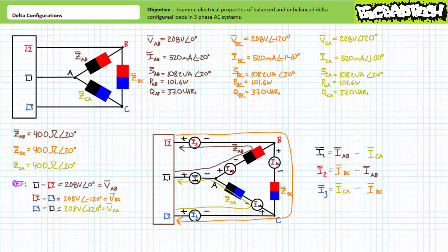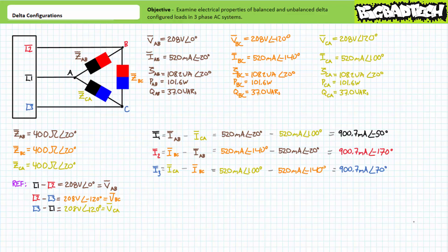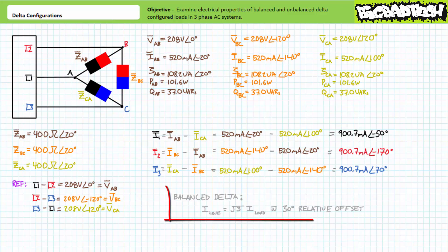Substituting in our previously calculated values, I1 is 900.7 milliamperes at an angle of negative 50 degrees. I2 is also 900.7 milliamperes at negative 170 degrees. And I3 is also 900.7 milliamperes at 70 degrees. Each line current magnitude is the same and exhibits a relative 120 degree phase shift. Additionally, each line current magnitude is square root three, or approximately 1.73 times the nearest load current magnitude, and exhibits a 30 degree phase-shifted offset from the nearest load current — a great shortcut for checking calculations.